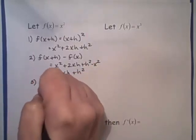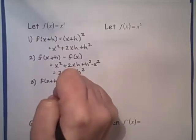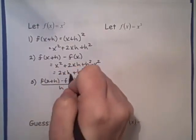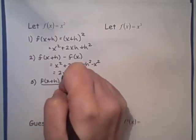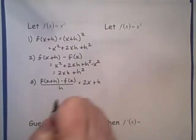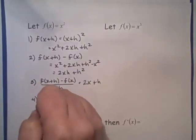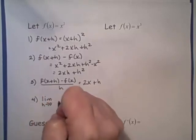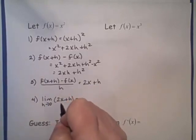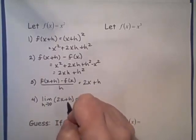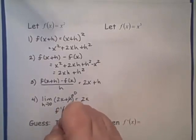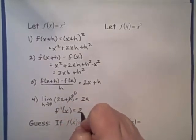Step 3, we take what we have from step 2 and divide by h. Dividing both terms by h, 2xh becomes 2x and h² becomes h. Finally, we take the limit as h approaches 0 of (2x + h). Nothing happens to the 2x term, but the h term goes to 0. So we get f'(x) = 2x.